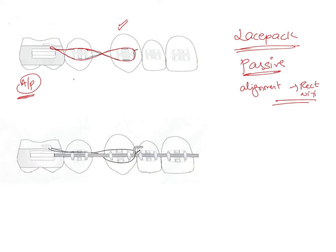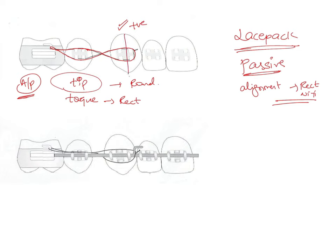Whenever a wire is placed into the bracket, two things are expressed: tip and torque. Tip is expressed first; torque is only expressed with rectangular wires, while tip can be expressed even with round wires. The maxillary canine has a positive tip, meaning that when the aligning arch wire is placed, the tip is expressed first and the canine tries to move anteriorly.